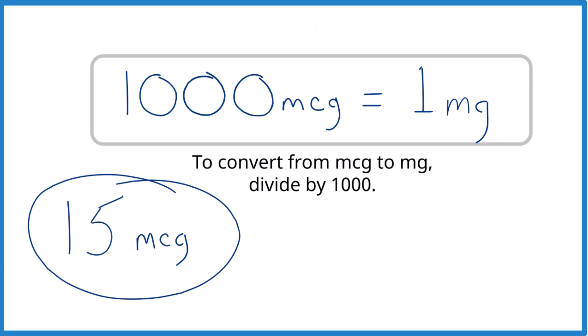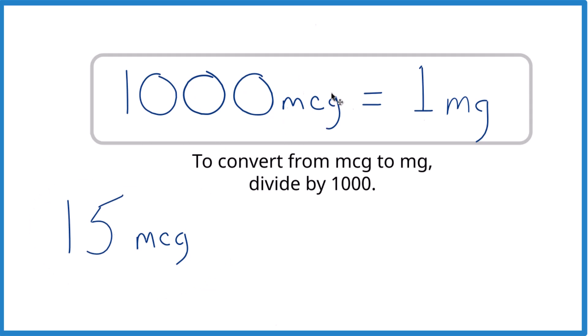And when we do that, you might see this written like this. So instead of MCG, you might see it this way here. So we're going from micrograms to milligrams. 1,000 micrograms in one milligram.